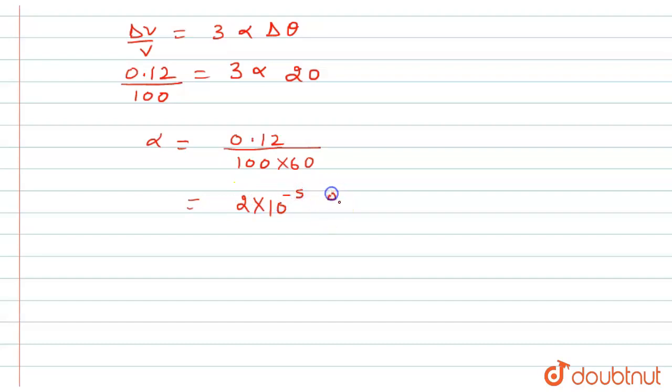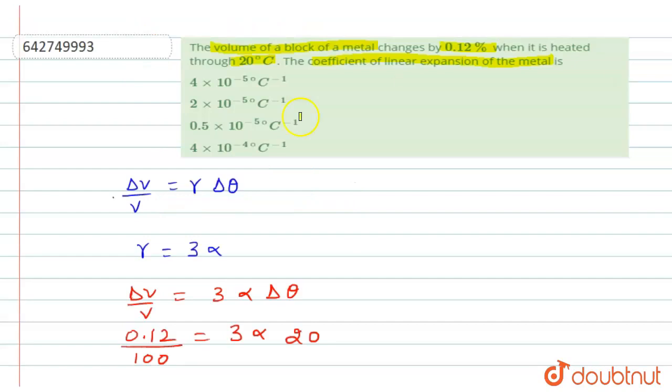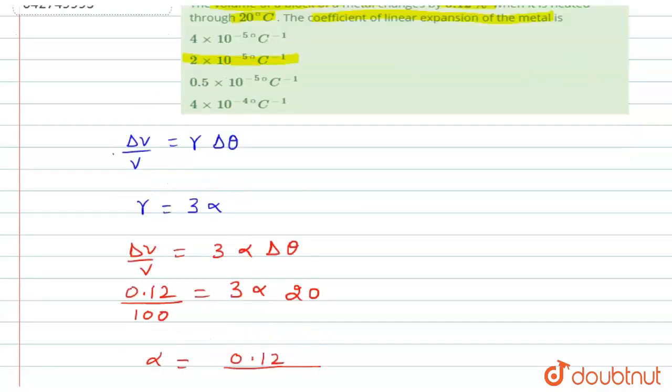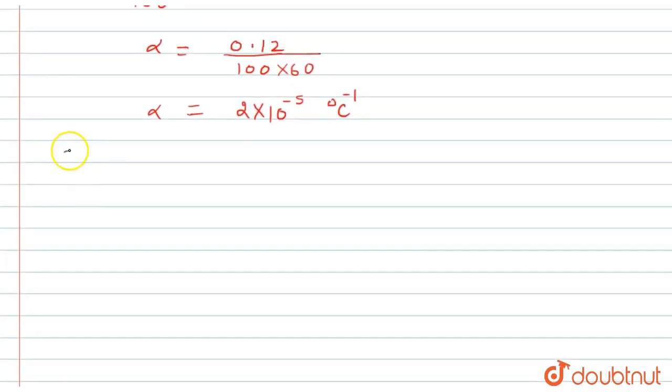So this is the coefficient of linear expansion. According to this, which option is correct? 2 × 10^-5 per degree Celsius is in our second option. So we can write the final answer that option 2 is the correct option. So this is the answer of this question. I hope you understood the explanation. Thank you.